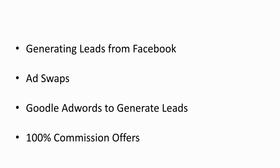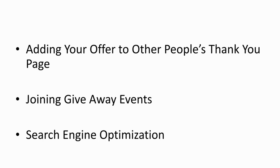Have you noticed there are some blog sites with a small logo with the word 'ad' beside the links? That's AdWords. In the next module, we'll talk about 100% commission offers. This is one of the fastest ways to generate a huge mailing list, by giving out a 100% commission offer to your affiliates. I will show you how to add your offer on other people's thank you page as well.